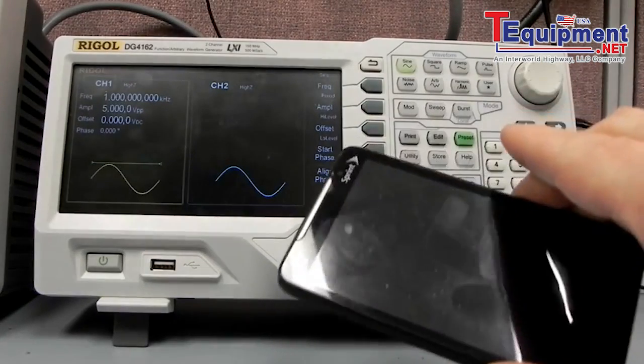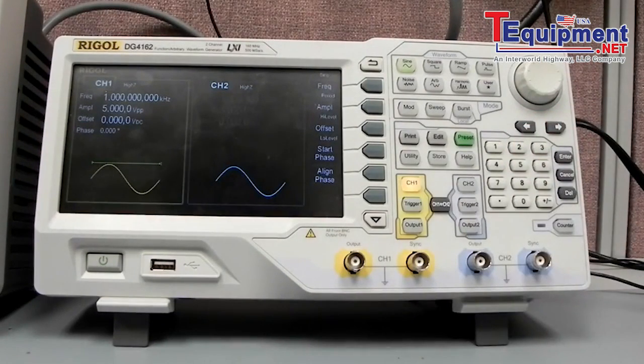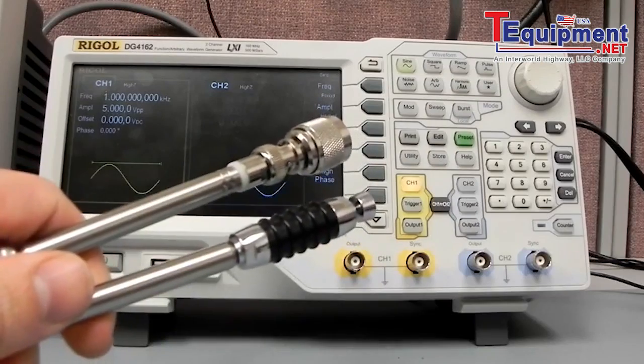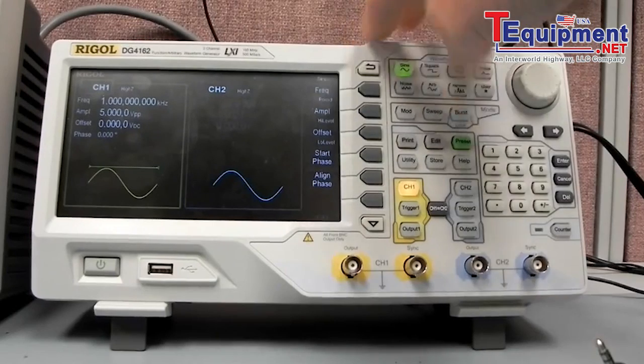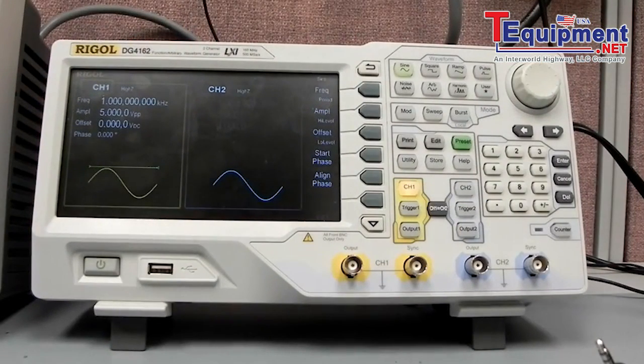We're going to use my cell phone and two fancy antennas with a custom cable that we made in order to do a little FM modulation and transmission and then demodulation using the spectrum analyzer.